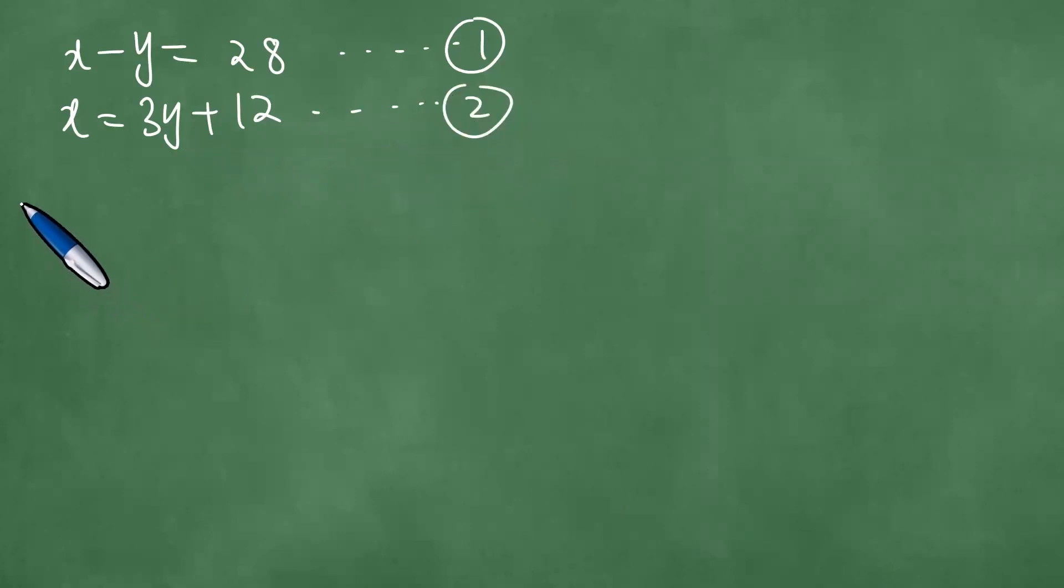Now we can put equation 2 into equation 1. If you put equation 2 into equation 1, we obtain in the place of x, we put 3y plus 12. So we're going to put 3y plus 12 minus y equals 28.